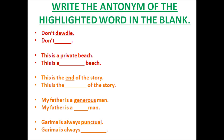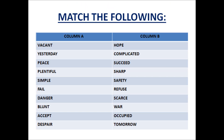Now children, the next exercise that you have to do in your English language classwork copy is match the following. So let's read column A: vacant, yesterday, peace, plentiful, simple, fail, danger, blunt, accept, despair. And in column B it's given: hope, complicated, succeed, sharp, safety, refuse, scarce, war, occupied, tomorrow.